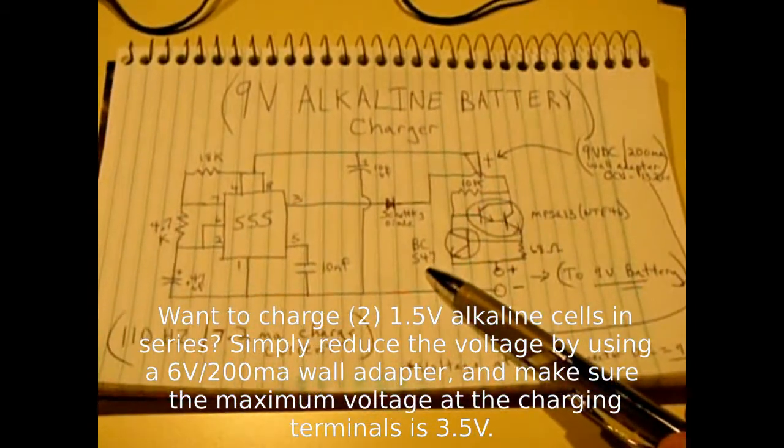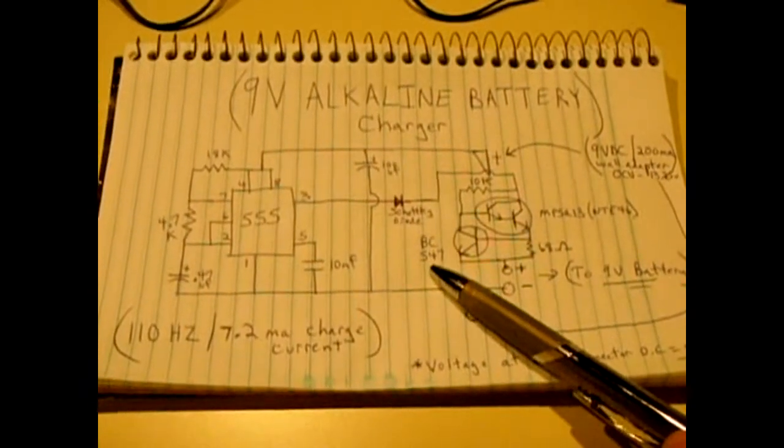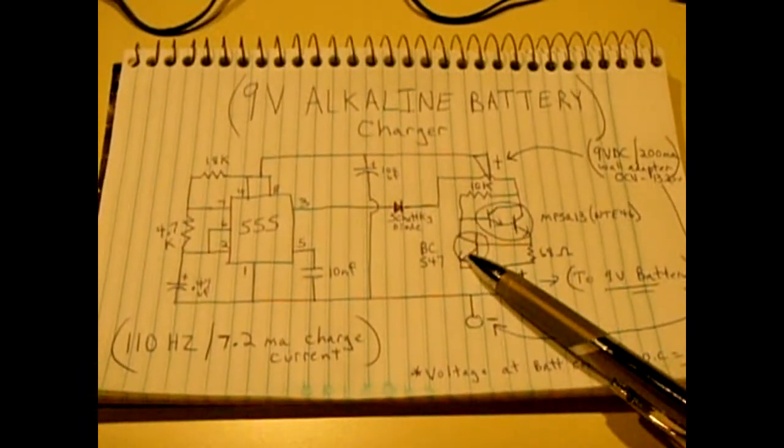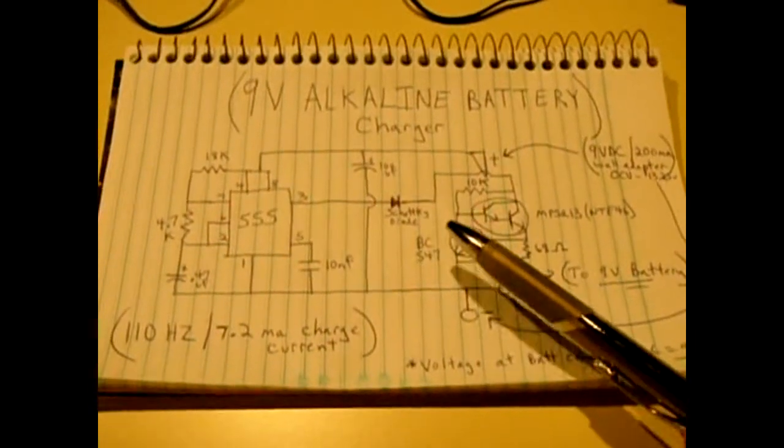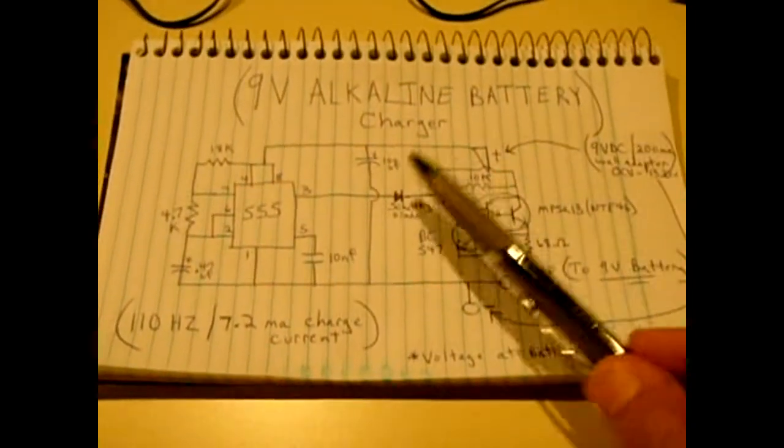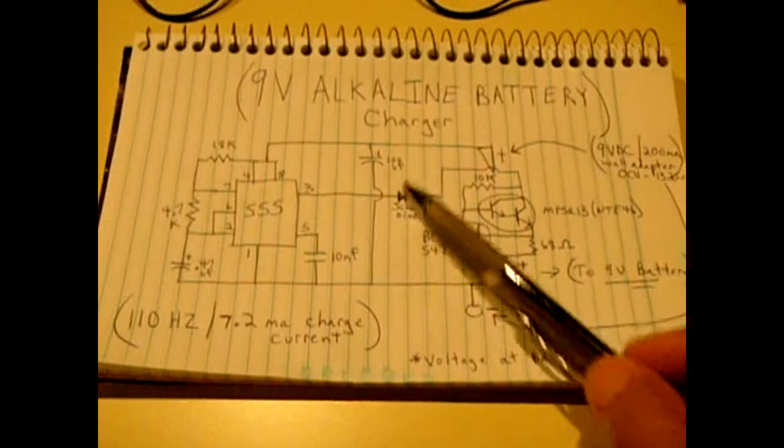This is a simple 2N3904 or a BC547. You could use a 2N4401, a lot of different ones will work. You have a 100 microfarad capacitor across the rail.